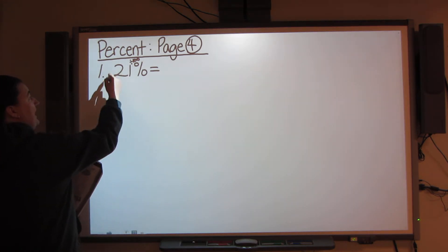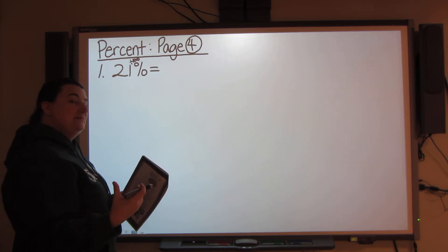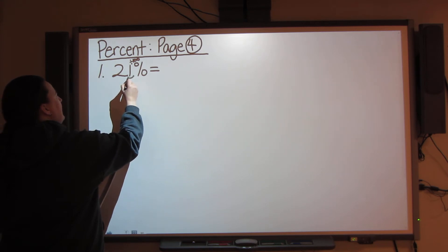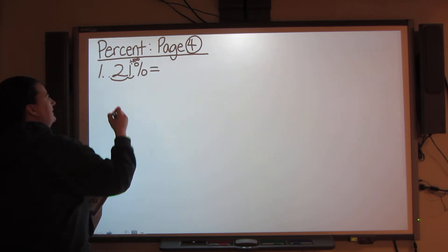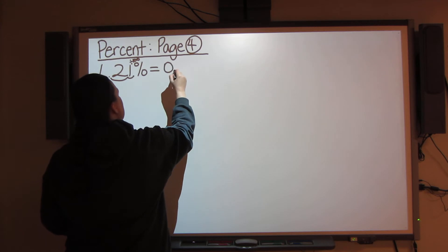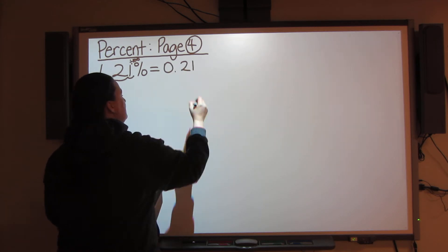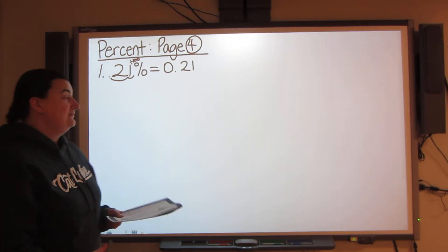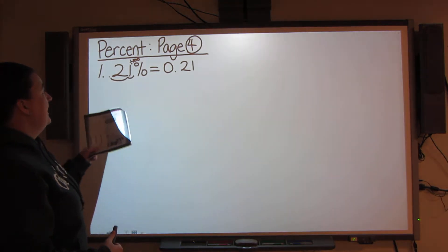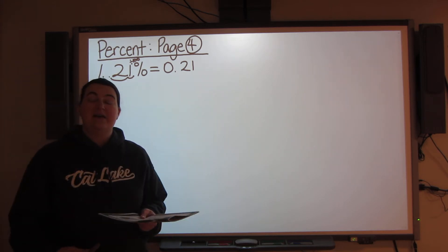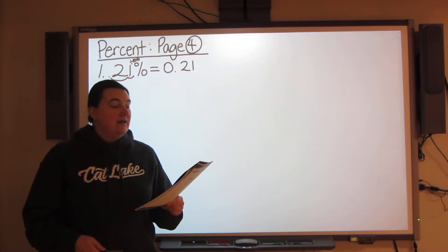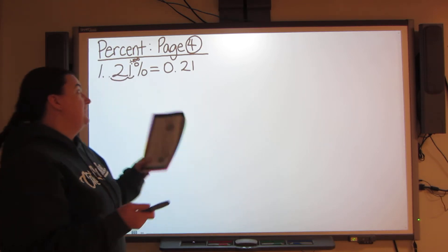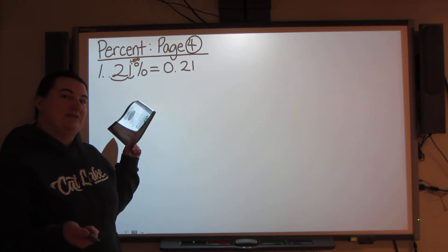So remember, I have 21% — I need to add a decimal. When I don't have a decimal, it goes at the end of the number, and then I move it two spots: one, two. So 21% is 0.21, or 21 hundredths. I divide it by 100 and move that decimal two spots over. So that's how you're going to do all the rest of the questions from 1 to 8 — divide by 100, move the decimal two spots over.